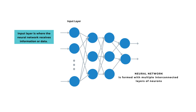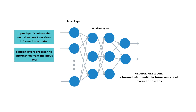The hidden layers are in-between layers that process the information from the input layer. They consist of interconnected neurons that perform calculations on the input data. These calculations involve multiplying the input values by weights, summing them up and passing the result through an activation function. Hidden layers are responsible for learning and extracting meaningful patterns or features from the data.